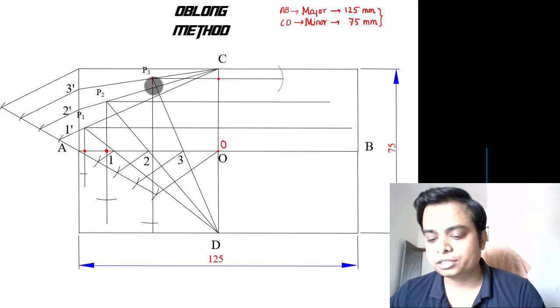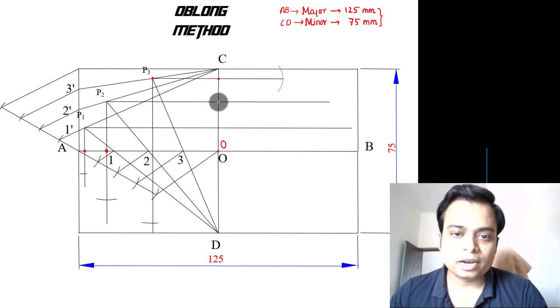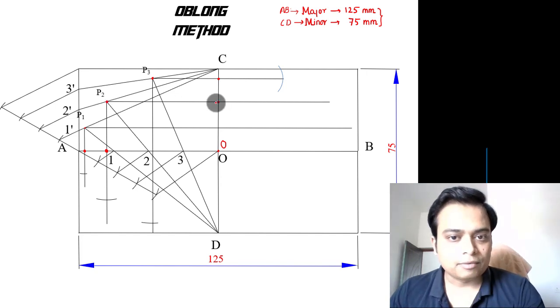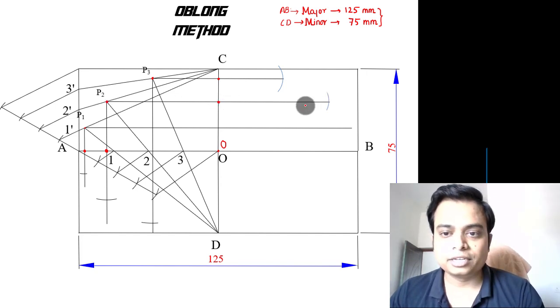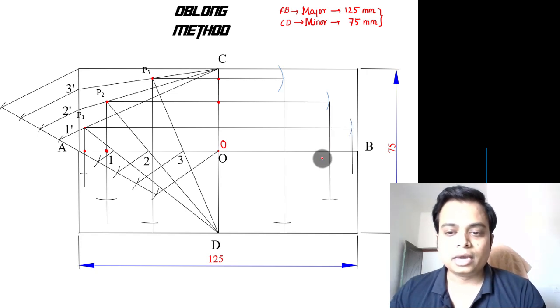In the same manner, keep one leg of your compass here, other leg over here, and with that much amount as the radii and with this as the center, cut an arc. Reflect it below and these are the points.